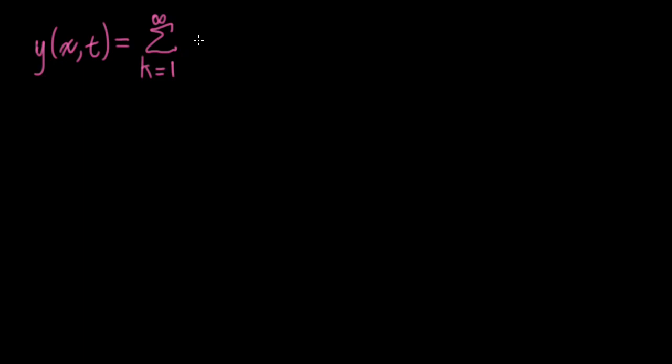Now, these solutions have a spatial aspect as indicated by the sign I'm writing here. I'm writing sine k pi over l, where l is the length of the string x. x is the position along the string, and they have a temporal aspect that has two components.